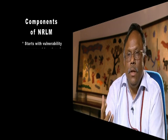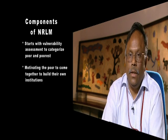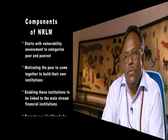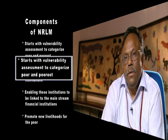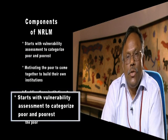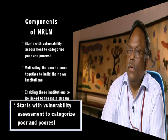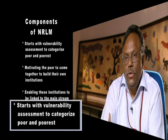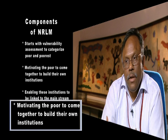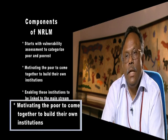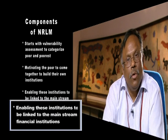The second step would be motivating the poor to come together to build their own organizations. This is the institution building, capacity building phase where we ensure that all poor are part of one network or the other. The base unit is the self-help group of women, and then there is a federation of the self-help groups at the village level and further federation at either block level or below the block level.